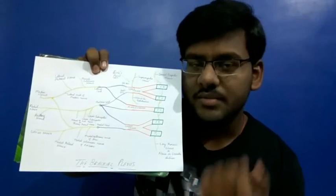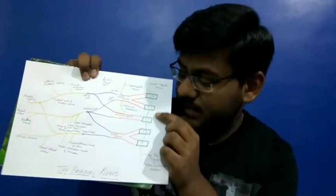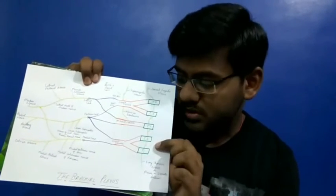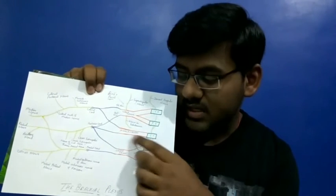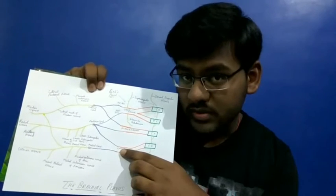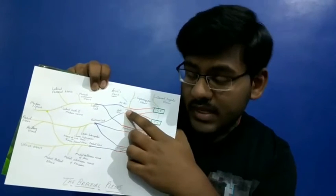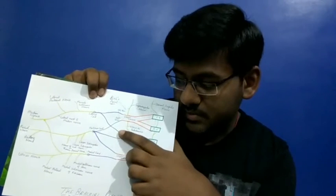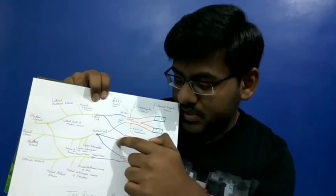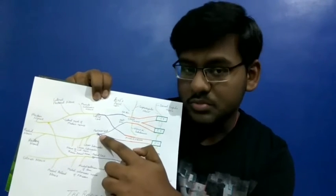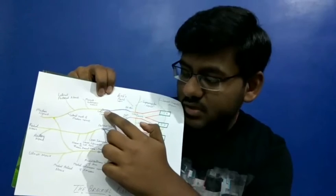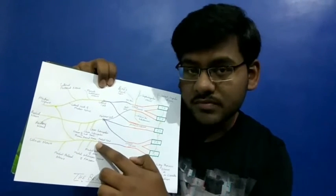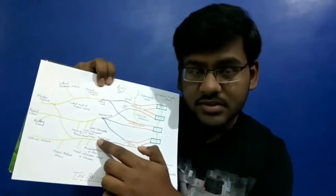Here is a diagram I have made showing the brachial plexus. These are the roots: C5, C6, C7, C8 and T1. C5 and C6 join together to form the upper trunk. C7 continues as the middle trunk. C8 and T1 join to form the lower trunk. Each trunk has two divisions — anterior and posterior. The posterior divisions of upper, middle and lower trunk combine to form the posterior cord. The anterior divisions of upper and middle trunk form the lateral cord, and the anterior division of the lower trunk directly forms the medial cord.